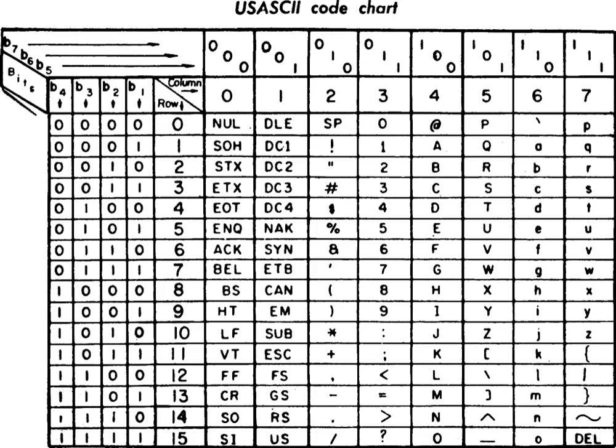ISO/IEC 646, like ASCII, is a 7-bit character set. It does not make any additional codes available, so the same code points encoded different characters in different countries. Escape codes were defined to indicate which national variant applied to a piece of text, but they were rarely used, so it was often impossible to know what variant to work with and therefore which character a code represented, and in general text processing systems could cope with only one variant anyway.